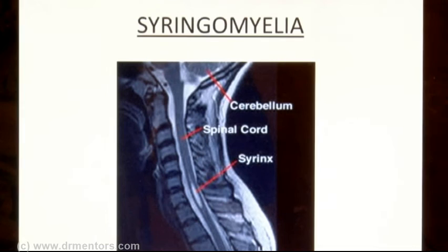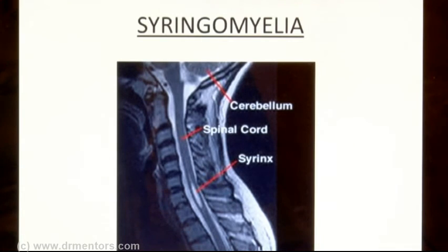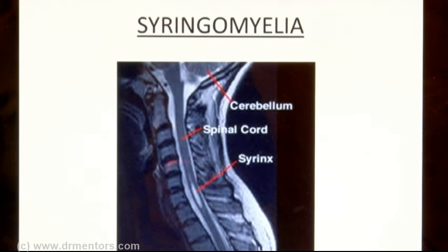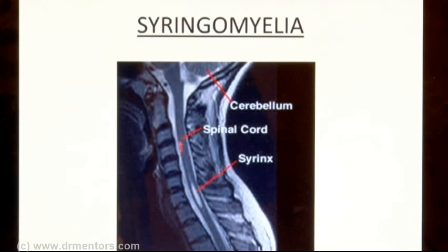We start with syringomyelia. By definition, syringomyelia is abnormal and progressive dilatation of the central canal of the spinal cord. The central canal contains CSF, which appears white on MRI. The black structure you see is the normal spinal cord — this is the posterior part and this is the anterior part — with the white outline on both sides given by the CSF present in the dura mater.